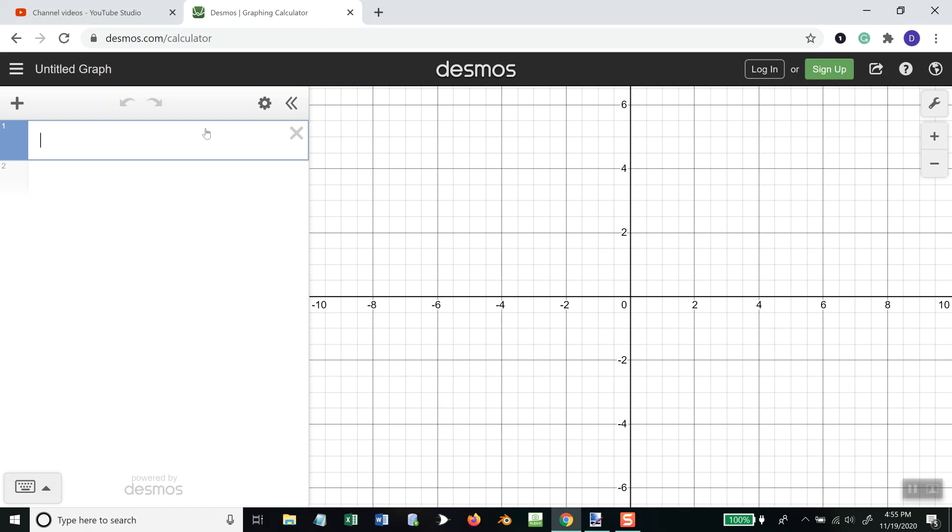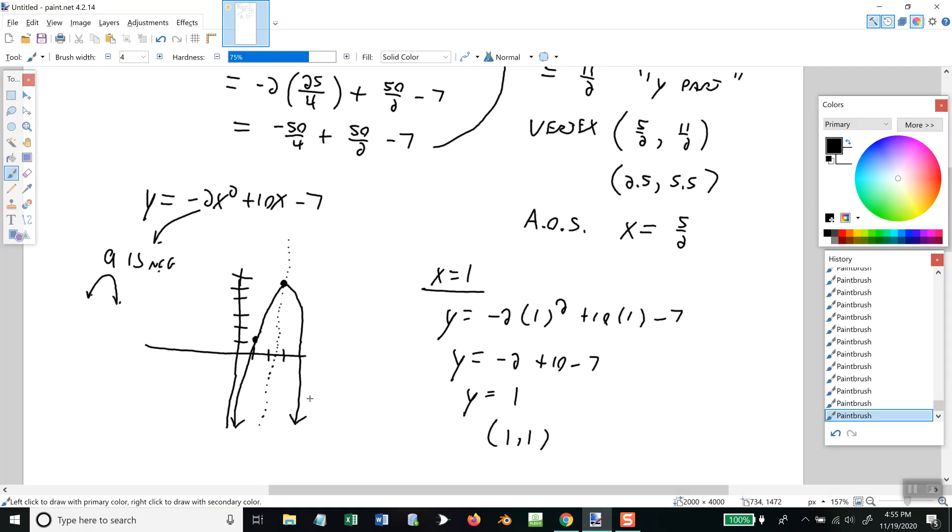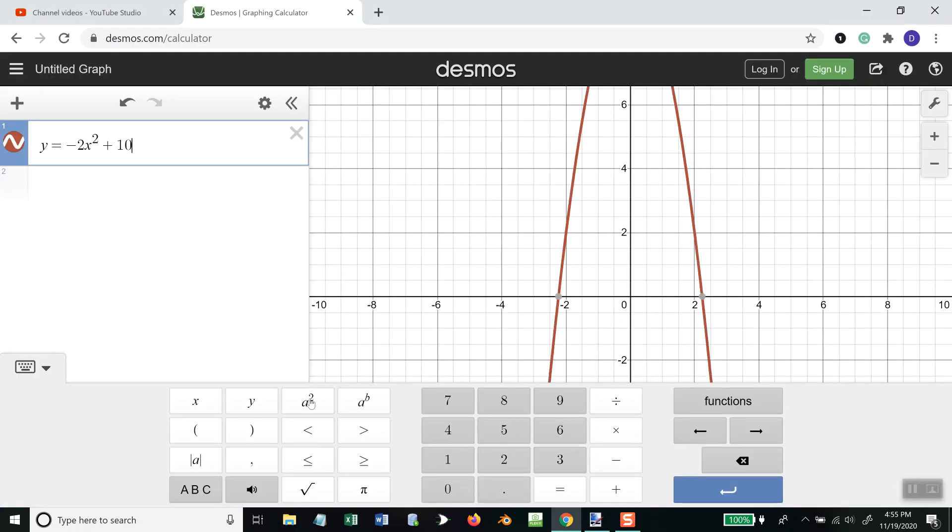y = -2x². So, type y = -2x, the second power. You can come down here to this little keyboard. And you can choose the second power here. Or you can just do a caret too. And plus 10x, plus 10x, minus 7.